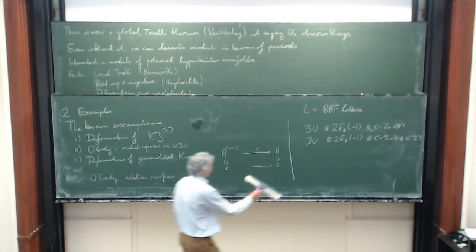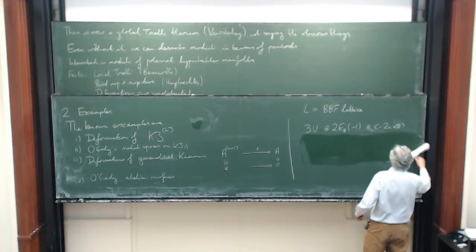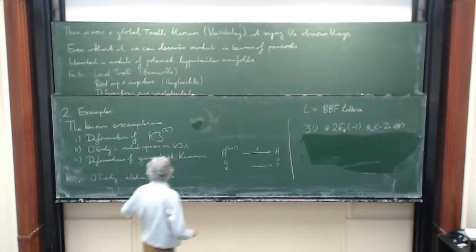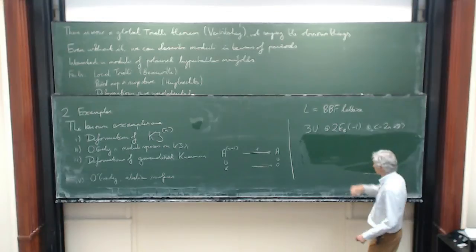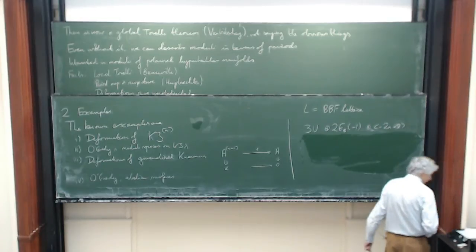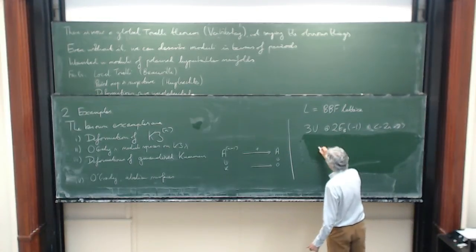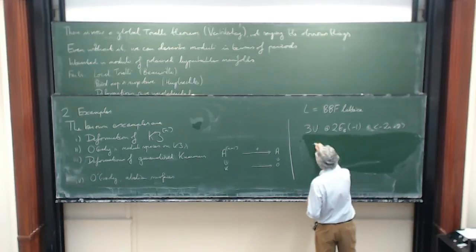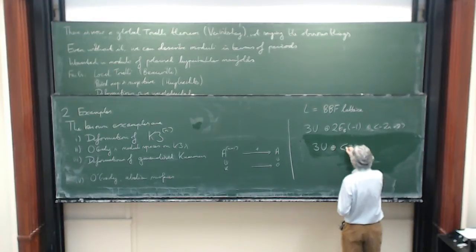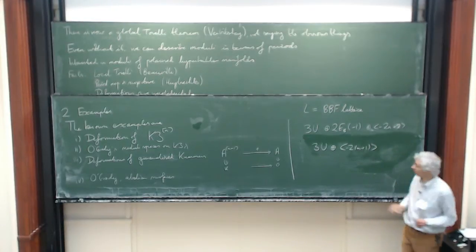I've told you there's this Beauville-Bogomolov-Fujiki form on H^2. Let me write abstractly what that lattice is for each of these. The first one is three copies of the hyperbolic plane U plus two copies of E8 negative definite, and then a minus 2n. The generalized Kummer lattice is just three copies of U and then the same thing minus 2(n+1), and this is for n greater than or equal to 2.